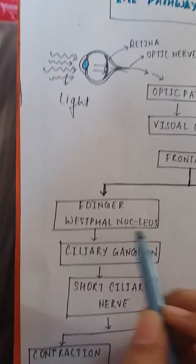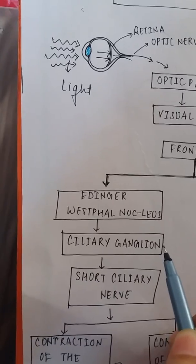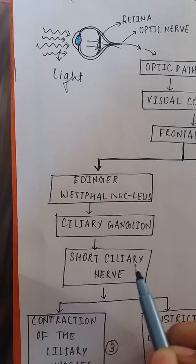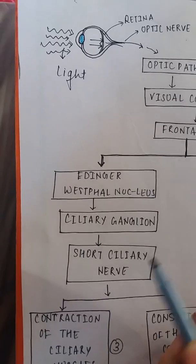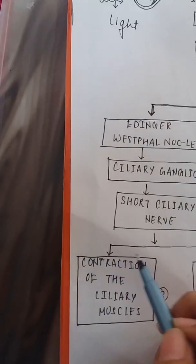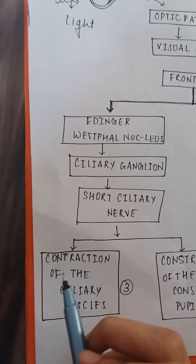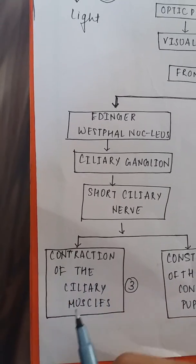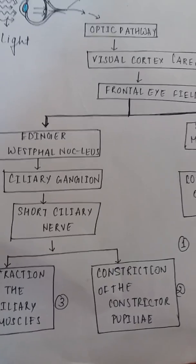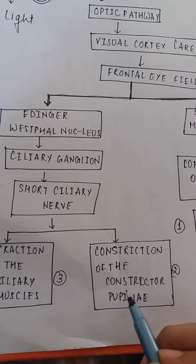From the Edinger-Westphal nucleus, impulses reach the ciliary ganglion, and from there travel via the short ciliary nerve to act on the contraction of the ciliary muscles and the constriction of the constrictor pupillae muscle.